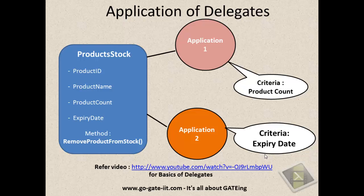So to start with, we will assume a product cart application with some set of products. Here you can notice we have a class called ProductStock which has some properties: ProductId, ProductName, ProductCount and ExpiryDate, and which has a method called RemoveProducts from Stock. Now there are certain client applications, say Application1 and Application2, which want to use this class to delete or remove products based on certain criteria. For Application1 the criteria is product count and for Application2 the criteria is ExpiryDate.